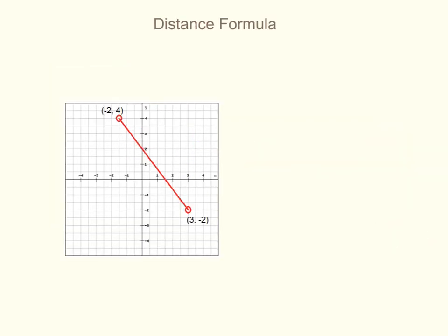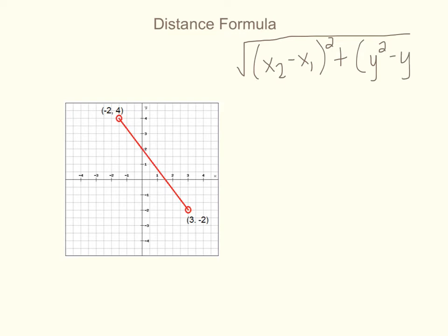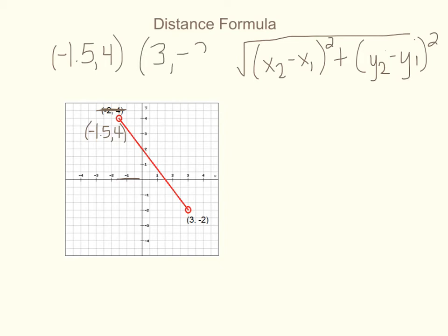Now I'm going to use the distance formula to find the same exact line, so we should get the same answer but in a different way. The distance formula is the square root of (x2 minus x1) squared plus (y2 minus y1) squared. I do notice there's an error on the picture — this point shouldn't be negative two four, because it only goes over to one and a half, so this point should be negative one point five comma four. So my two ordered pairs are negative one point five comma four, and three comma negative two, and I need to label x1, y1, x2, and y2.